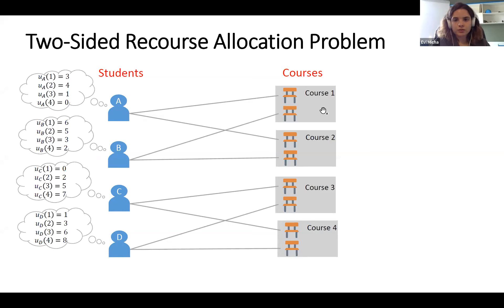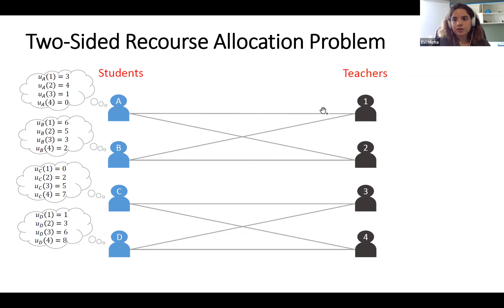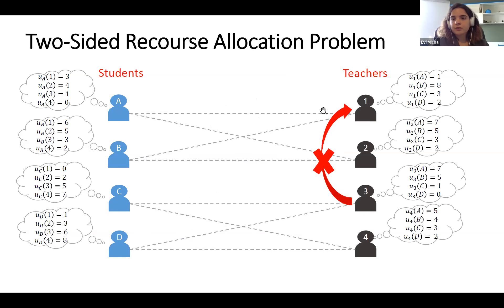Not only do agents have preferences over goods, but the goods also have preferences over agents. The previous allocation that was EF1 with respect to students is not fair with respect to teachers — for example, teacher three envies teacher one for having more than one student, so it's not EF1 with respect to teachers. Using the classic model, you can find a matching fair to students, or one fair to teachers, but in this work we look for matchings fair with respect to both sides.